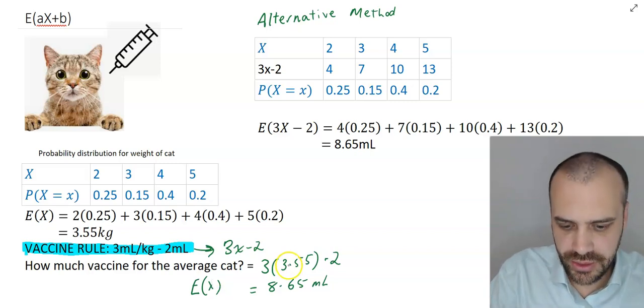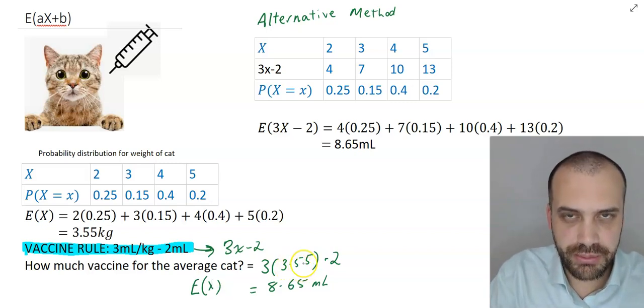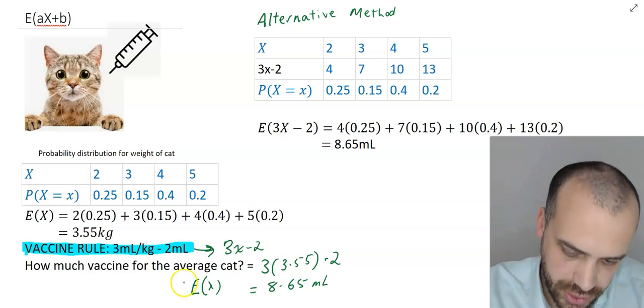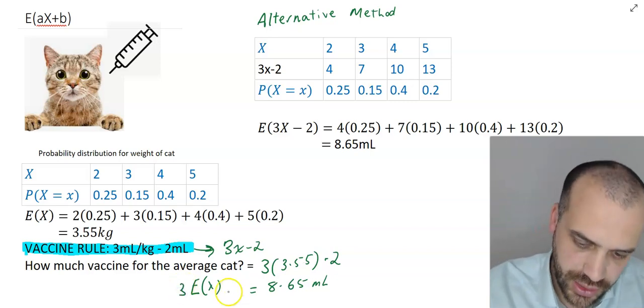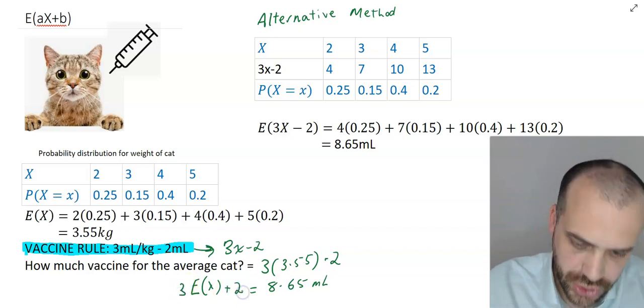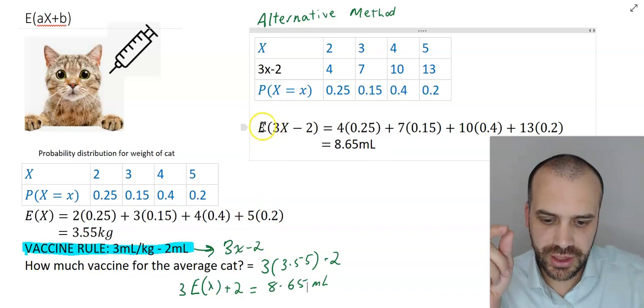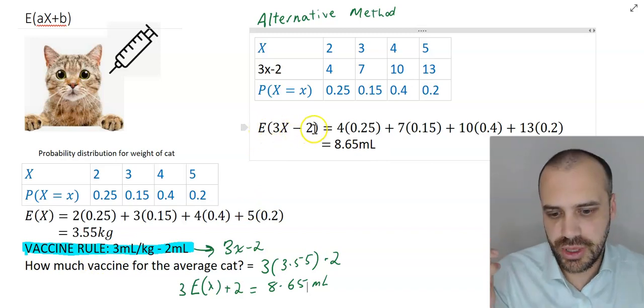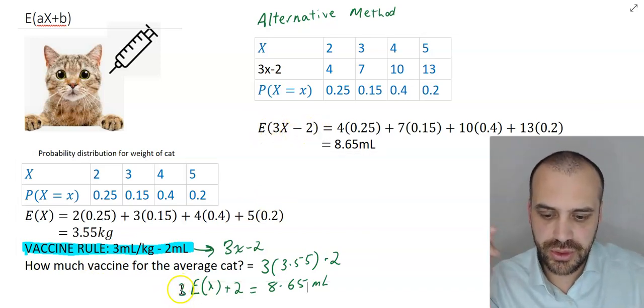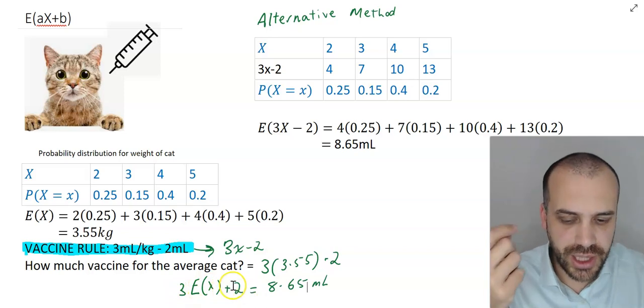But then that's E, x there. We multiplied E, x by 3, and then we added 2 on the end. And this is what this whole video is about. Now it's about the fact that E bracket 3x minus 2 is equal to 3, E, x plus 2.